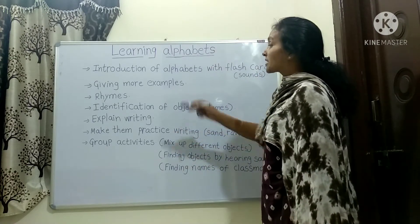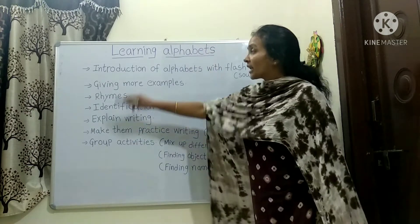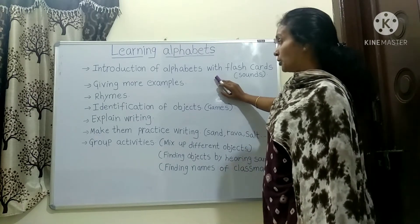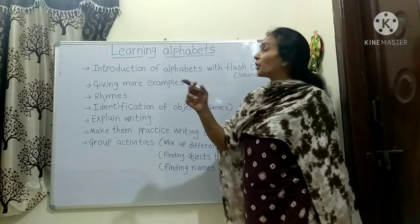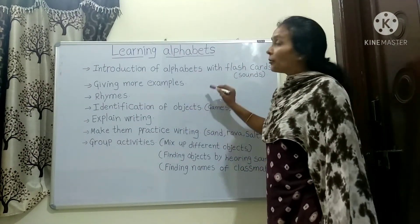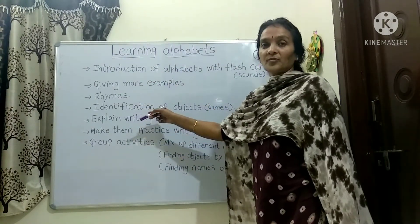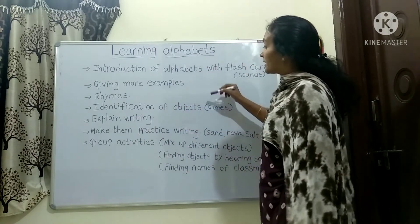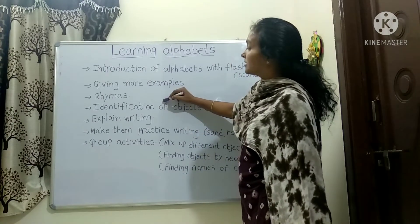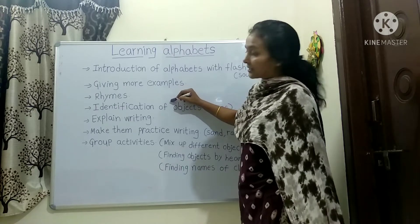For this, what we do is, we write that letter and we draw some pictures also on the board. Then we ask the child to identify the picture through the sound. That is one of the activities. Till here, the child learns the sound of the letter.